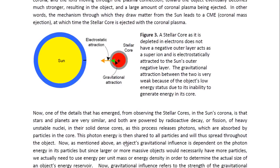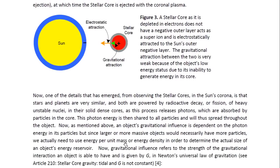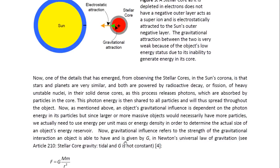Now, one of the details that has emerged from observing the stellar cores in the sun's corona is that stars and planets are very similar and both are powered by radioactive decay or fission of heavy unstable nuclei in the solid dense cores, as this process releases photons, which are absorbed by the particles in the core. Therefore, this photon energy is then shared to all particles and will thus spread throughout the object.